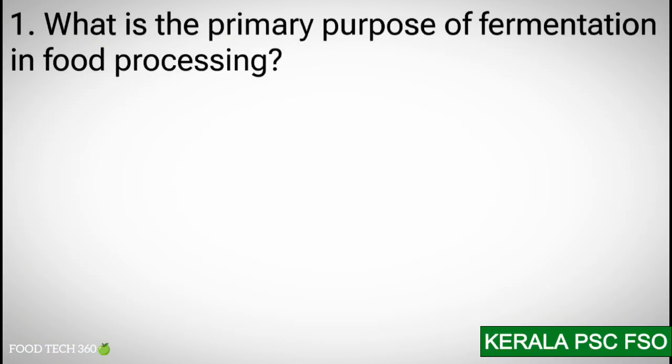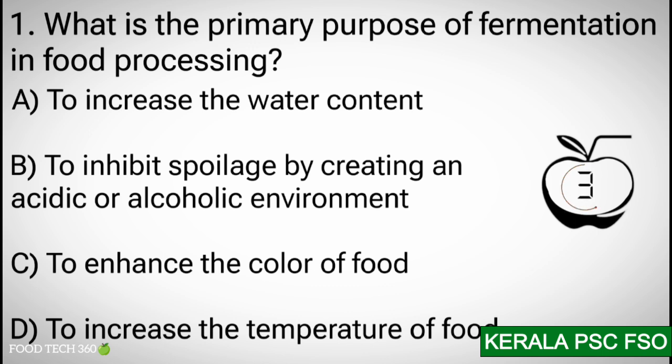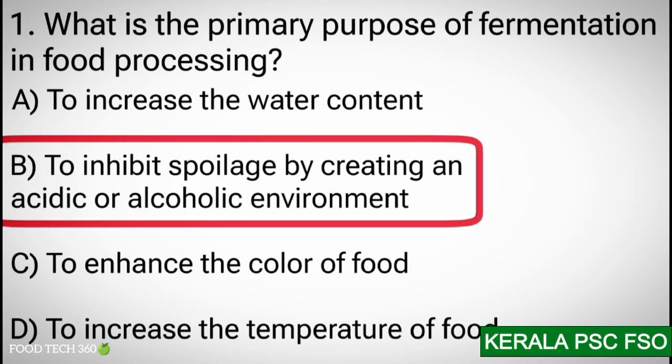Q1. What is the primary purpose of fermentation in food processing? A) To increase the water content. B) To inhibit spoilage by creating an acidic or alcoholic environment. C) To enhance the color of food. D) To increase the temperature of food. Correct answer: B — to inhibit spoilage by creating an acidic or alcoholic environment.